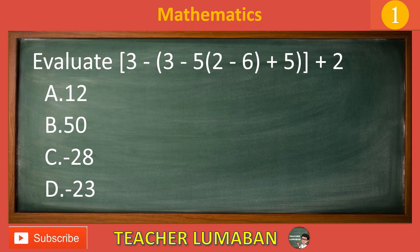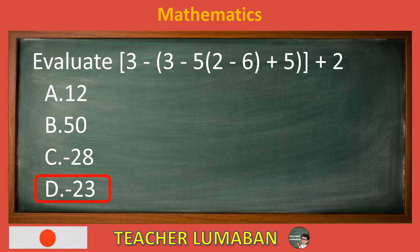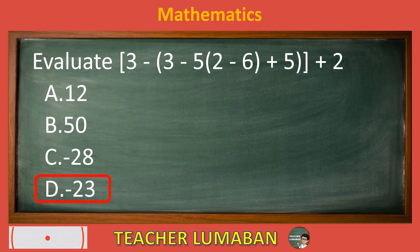The correct answer is Letter D: negative 23. The result of 3 minus (3 minus 5), 2 minus 6, plus 5, plus 2 is negative 23.